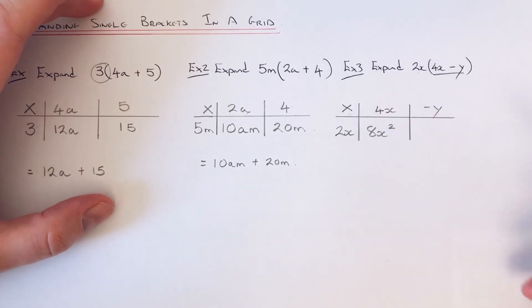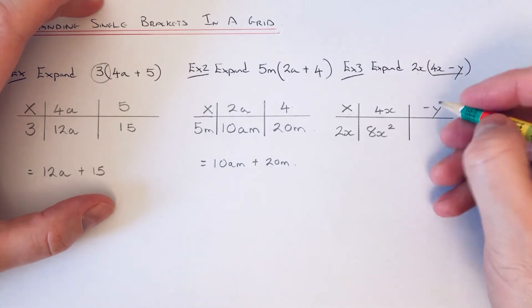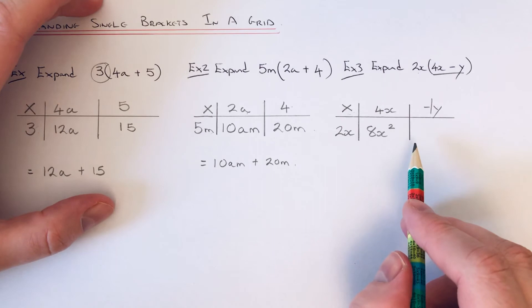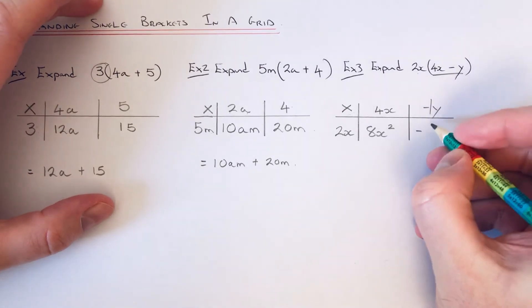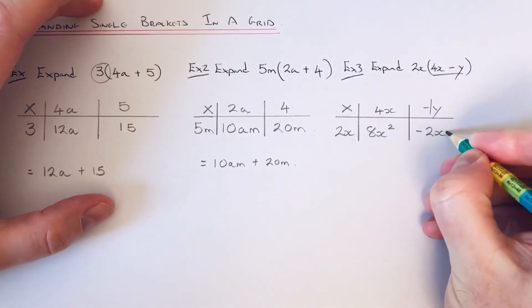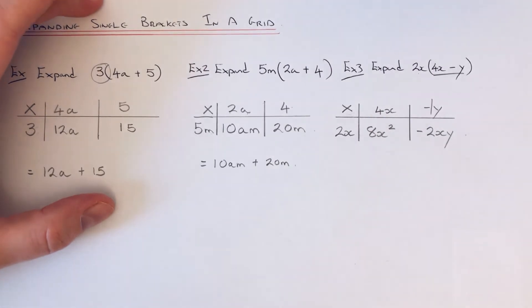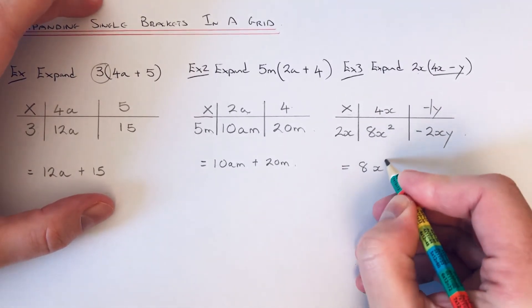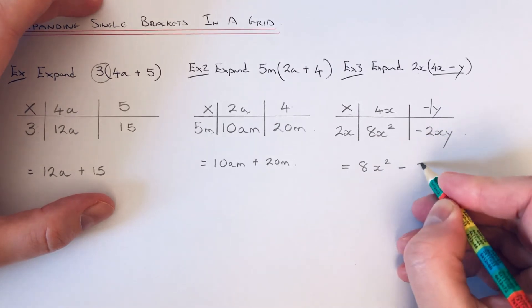Then we do 2x times -y. This is just the same as -1y, so 2x times -1y is -2, and then put the letters in alphabetical order. This time we have 8x², and it'd be -2xy.